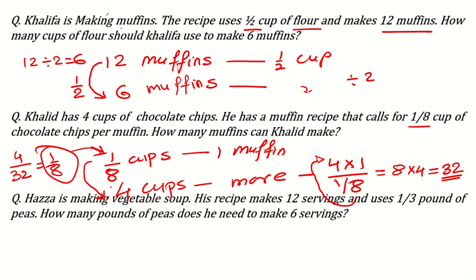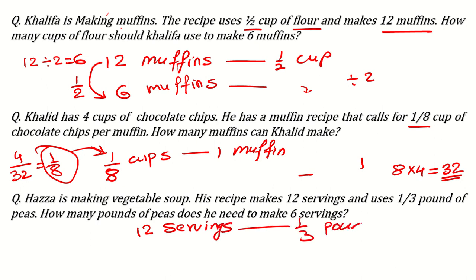Next question can be: Hazza is making vegetable soup. His recipe makes 12 servings and uses 1 over 3 pound of peas. How many pounds of peas does he need to make 6 servings? For 12 servings, he wants 1 over 3 pound. So for 6 servings, again, you see what is the relation here? If you divide 12 by 2, you will get 6. So here also you will have to divide by 2 to keep the same ratio. So 1 over 3 divided by 2 means 1 over 3 times 1 over 2, and answer will be 1 over 6 pound.